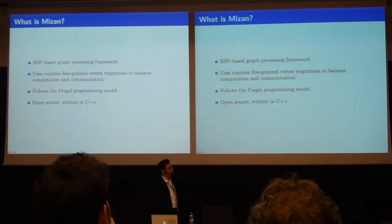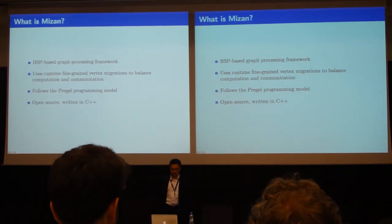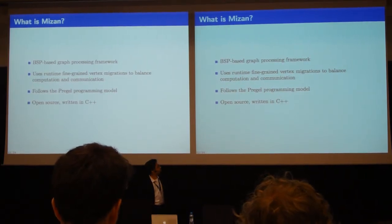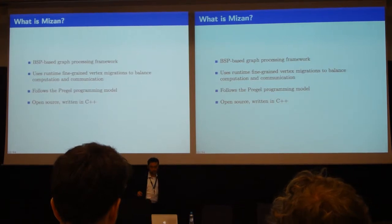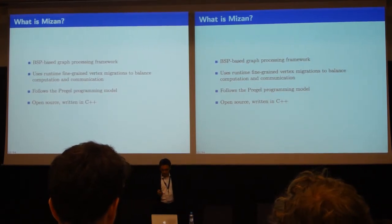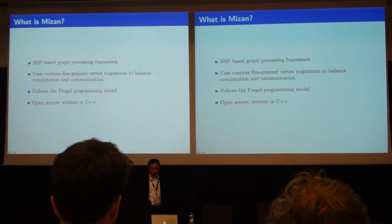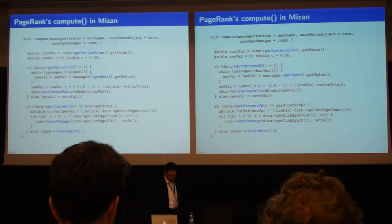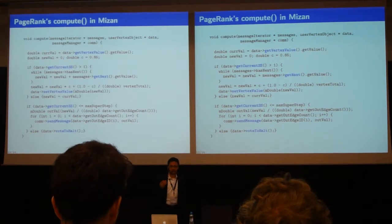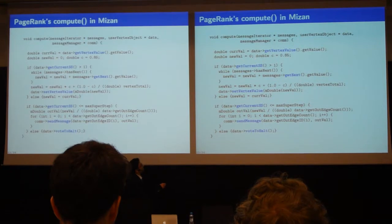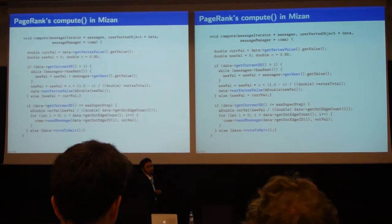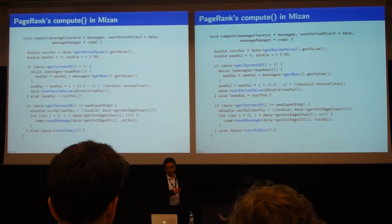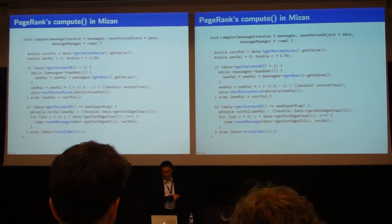Here we present Mizan as a bulk-synchronous parallel graph processing framework. It uses runtime fine-grained vertex migrations to balance computations and communication. It follows the Pregel computing model and is open source, written in C++. If you are familiar with the Pregel paper, you'll notice the API is not far from Pregel — it's very similar. This is actually a code snippet from our PageRank computation.